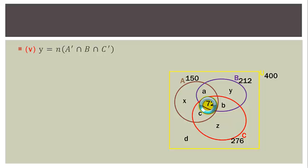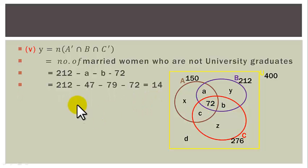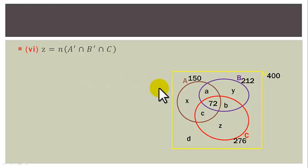Question 5: Y is the number in B but not A and not C — married women who are not university graduates. Y = 212 − A − B − 72 = 212 − 47 − 79 − 72 = 14.